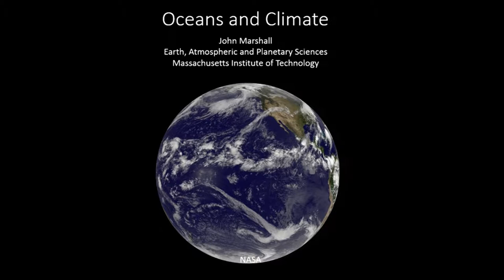I'm going to talk about the role of the oceans in climate. This is a beautiful image of clouds over the Pacific, and it just reminds us that there's a lot of ocean on the planet — 70% of the planet is covered by the ocean. The ocean is important in climate for at least three reasons.